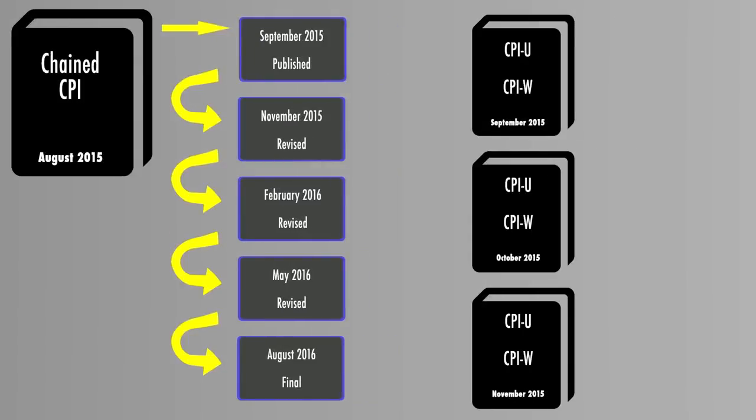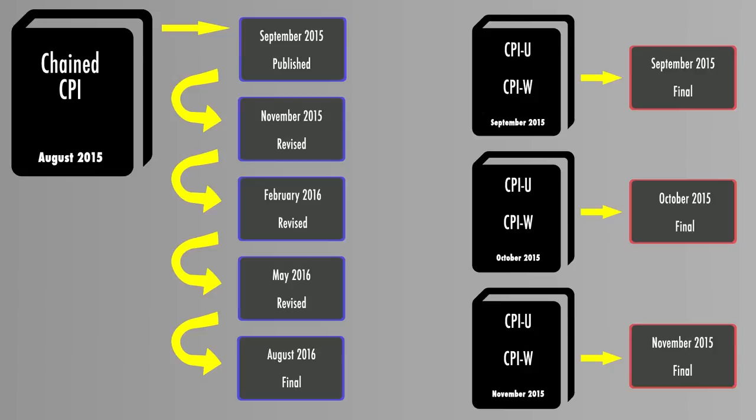For example, Chained CPI indexes for August 2015 are initially published in September 2015, revised each of the next four quarters, and aren't published as final until August 2016. In contrast, when we publish the CPI U and W indexes each month, they are considered final when first issued.